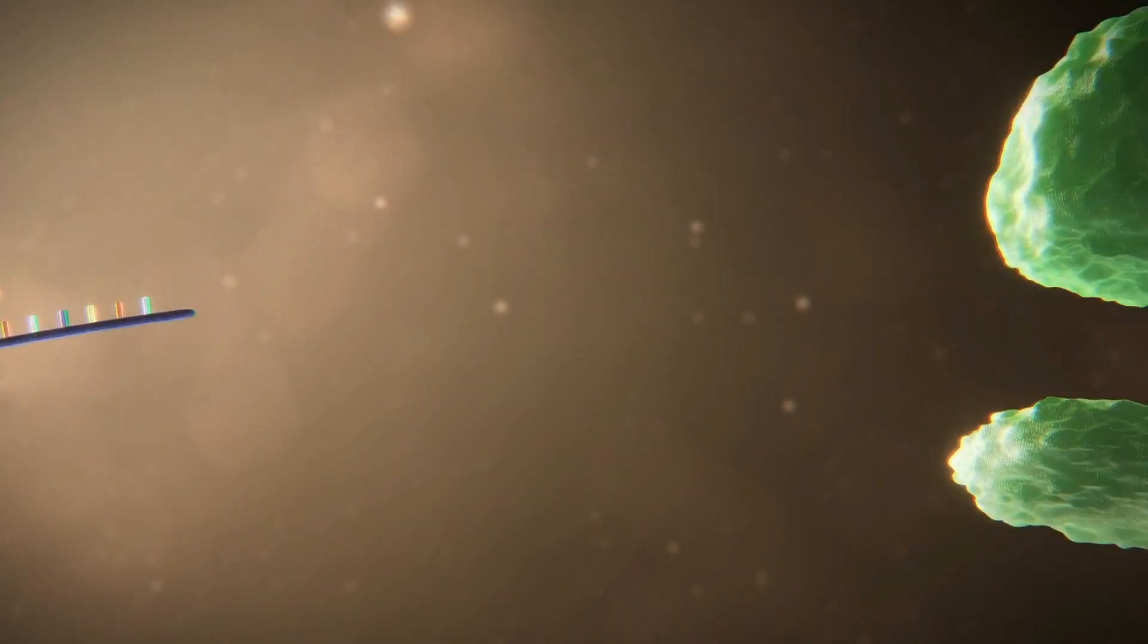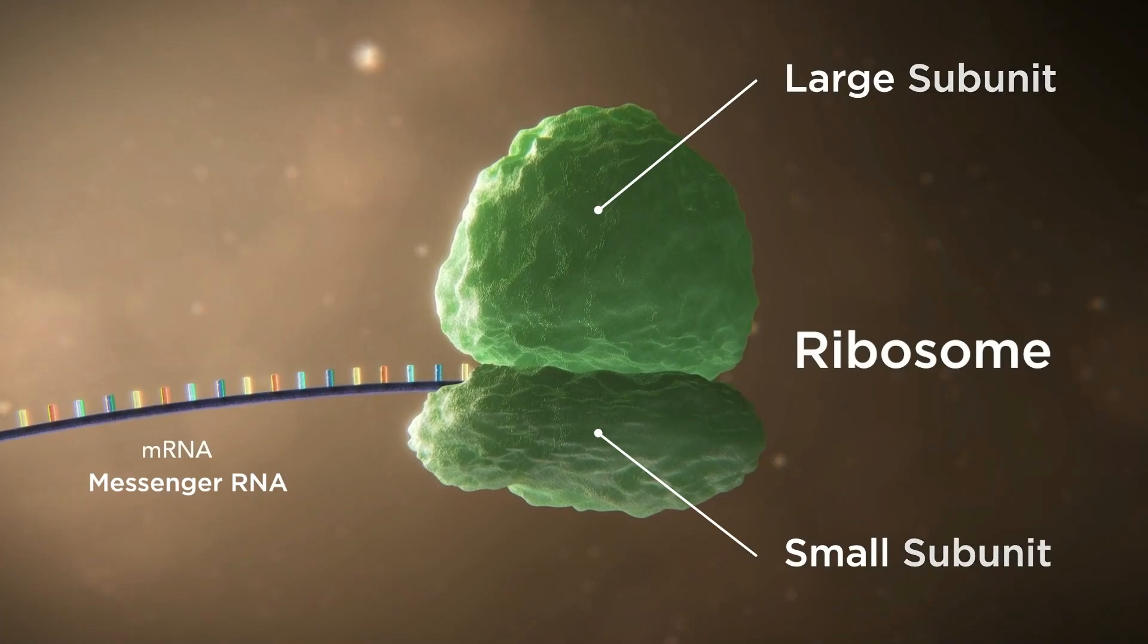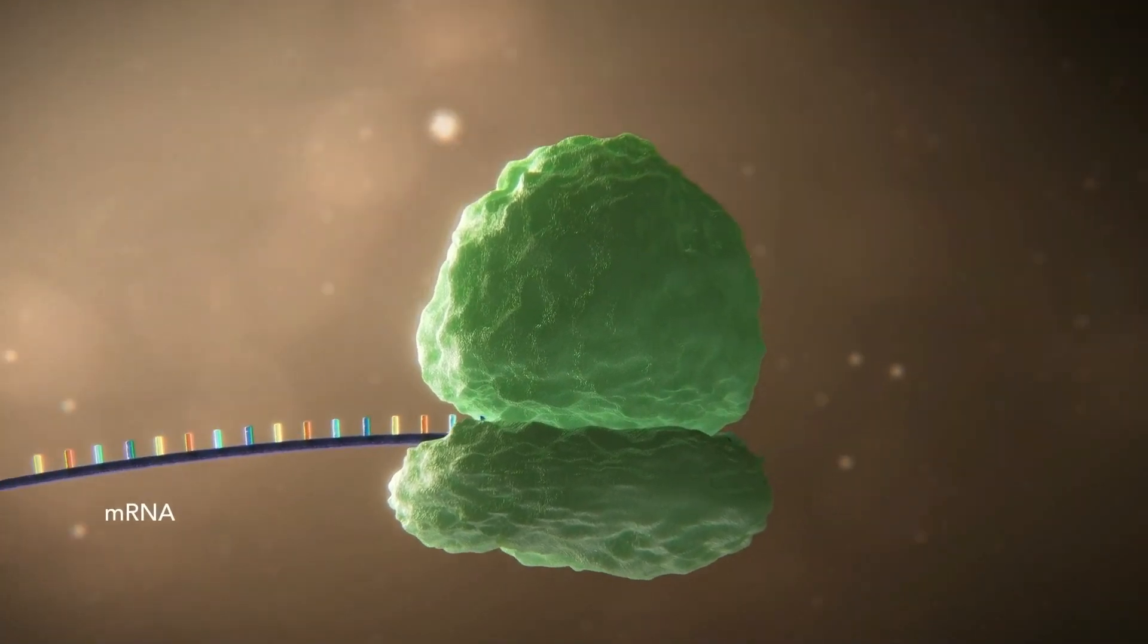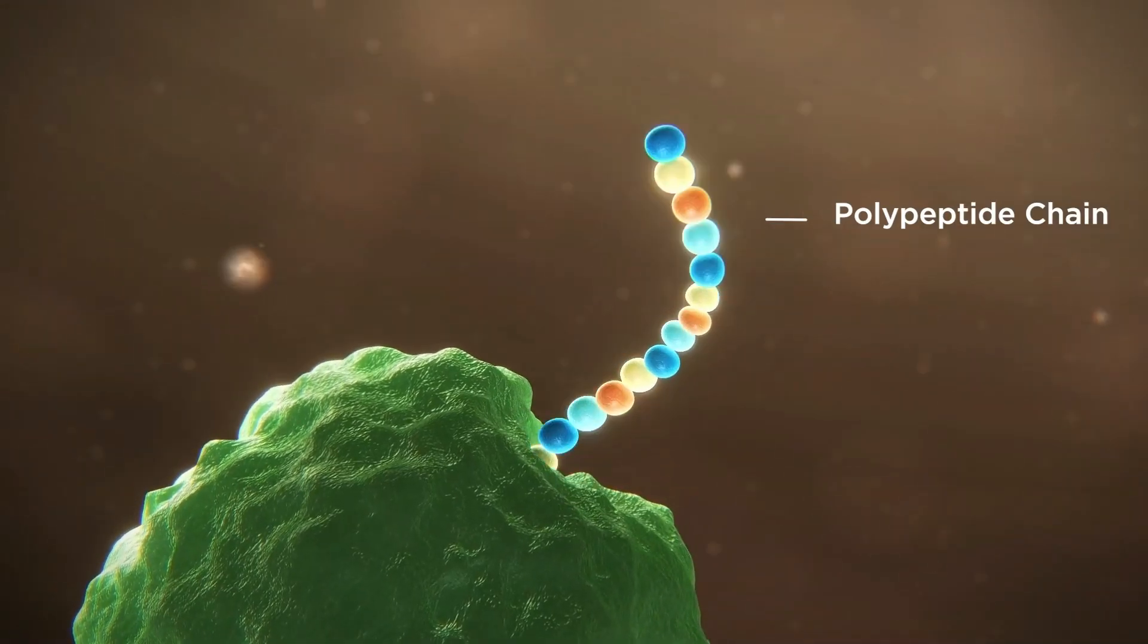Ribosomes synthesize proteins according to the specific instructions of messenger RNA. Messenger RNA, known as mRNA, is a single-stranded RNA molecule that contains the genetic instructions for manufacturing a protein.